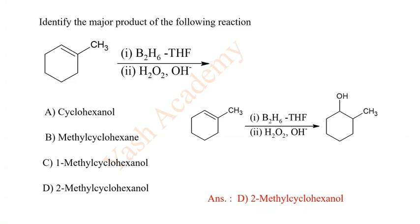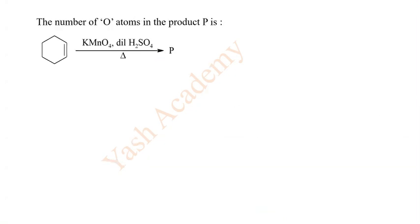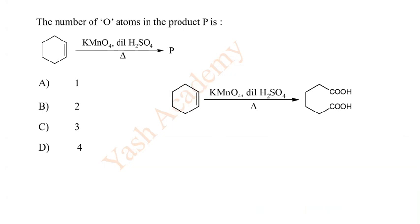The number of oxygen atoms in the product P is? Here reaction is given. Options: A 1, B 2, C 3, D 4. So correct answer option of this question is D: 4.